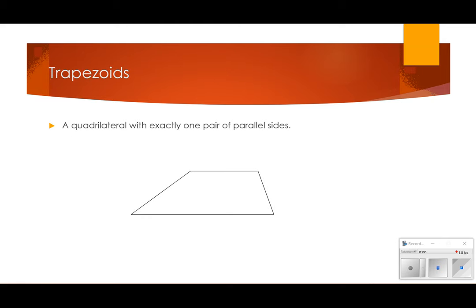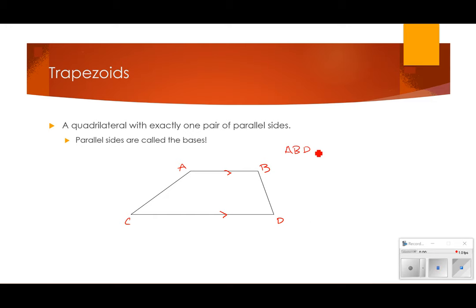A quadrilateral with exactly one pair of parallel sides is a trapezoid. These are the parallel sides. Parallel sides are what we call the bases, so you've got to know the vocabulary. This is quadrilateral ABDC, and the sides that are parallel are AB parallel to CD, and these are called our bases.